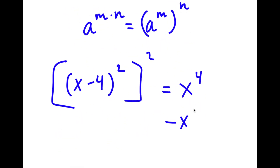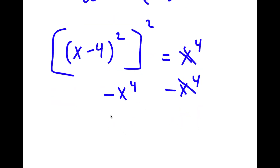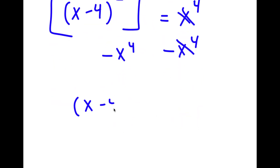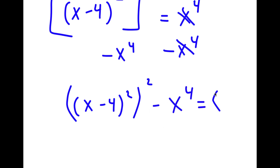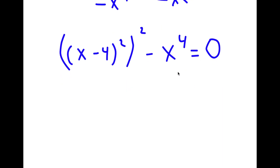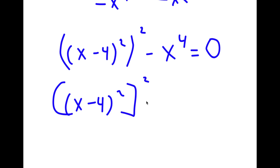Now I'm going to subtract x to the power of 4 on both sides. So now I have (x minus 4) squared, to the power of 2, minus x to the power of 4 is equal to 0. And x to the power of 4 I'm going to rewrite as x to the power of 2 to the power of 2.